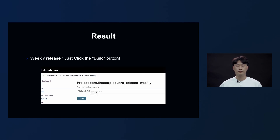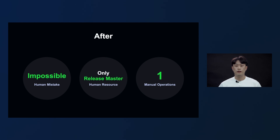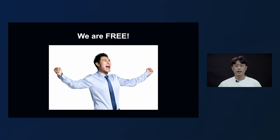This is the result of what we got from automation. Now, for the weekly release, all the release master has to do is click the build button in the Jenkins job. Before, human mistakes, involvement of all members, and a total of 41 manual operations were required for the release. But after automating the process, there is no room for human mistakes, only one release master is required, and only one manual operation is needed. Now, team members are free from the burden of release.